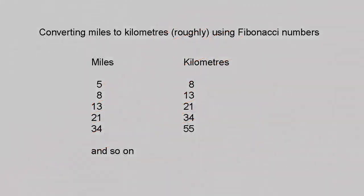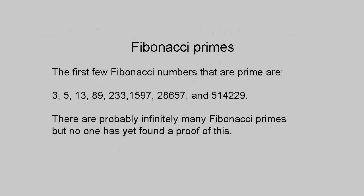An interesting use of the Fibonacci sequence is for converting miles to kilometers. For instance, if you want to know how many kilometers 5 miles is, take the Fibonacci number 5 and look at the next one, 8 — 5 miles is about 8 kilometers. This works because the conversion factor between miles and kilometers is roughly equal to the golden ratio. The first few Fibonacci numbers that are also prime numbers are 3, 5, 13, 89, 233, 1597, 28657 and 514229. It seems likely that there are infinitely many Fibonacci primes, but this has yet to be proven. However, it's relatively easy to show that for n ≥ 4, F_{4n+1} is never prime.